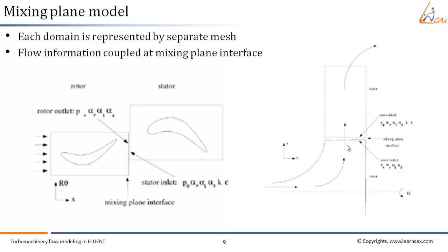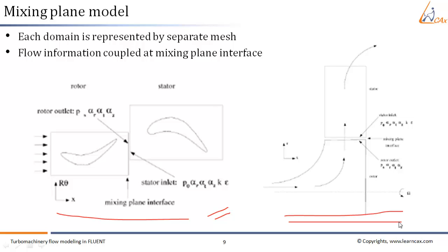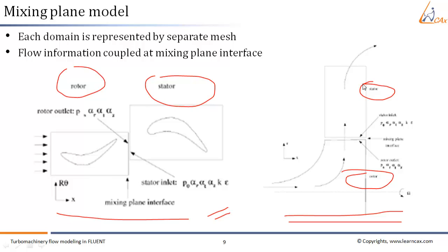Let us now discuss the mixing plane concept in detail. Consider turbomachinery stages as shown in the pictorial representation. Each blade passage contains periodic boundaries. The first image shows a constant radial plane within a single stage of an axial machine. The second image shows a constant theta plane within a mixed-flow device. In each case the stage consists of two flow domains: a rotor domain rotating at a prescribed angular velocity, followed by a stationary stator domain. The order of rotor and stator is arbitrary, and each domain is represented by a separate mesh.